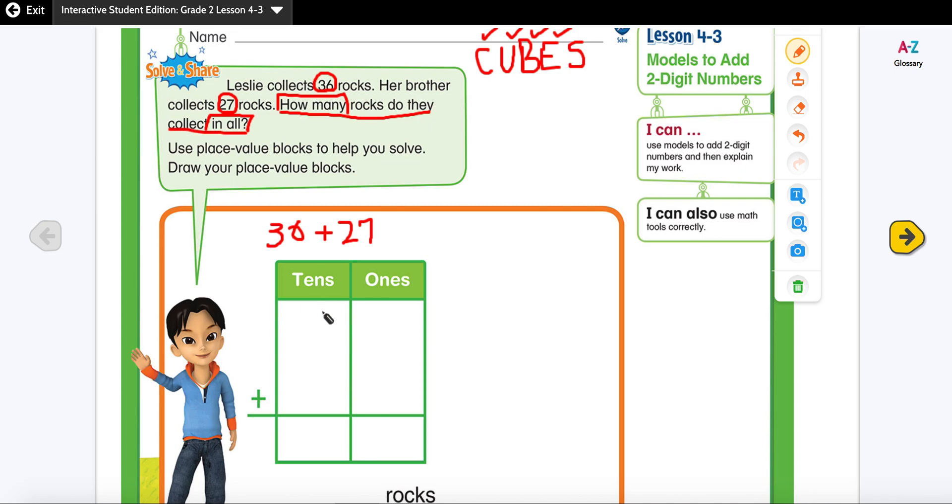Let's start. So we have 36. We are going to line up our numbers with tens on one side and ones on the other side. I'm also going to place my place value blocks.